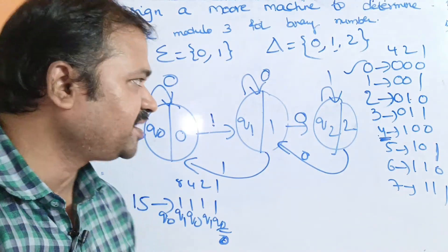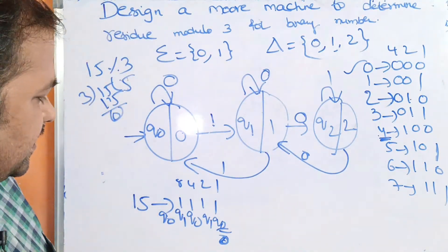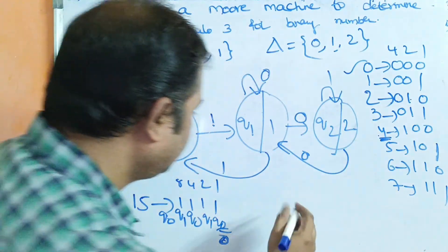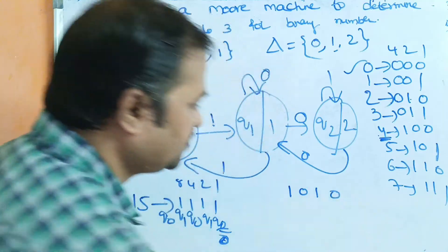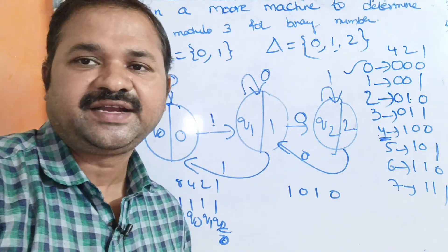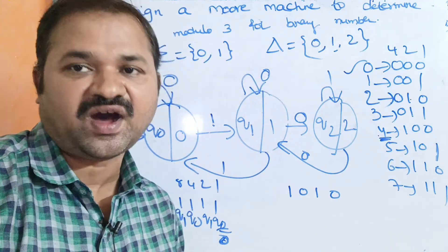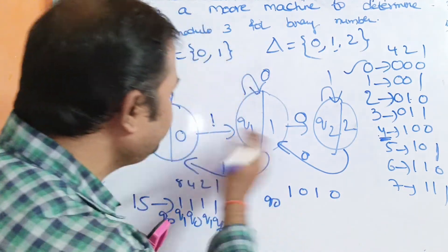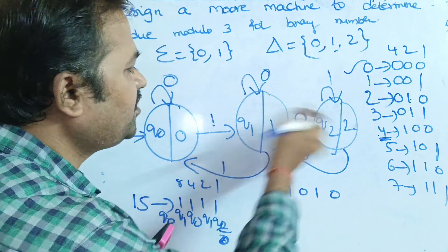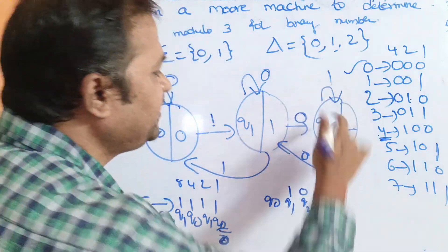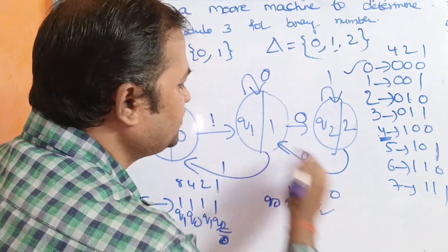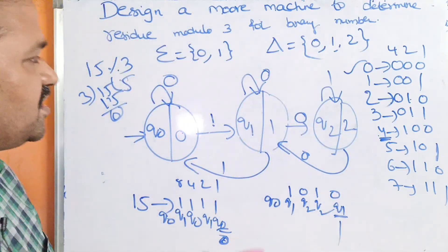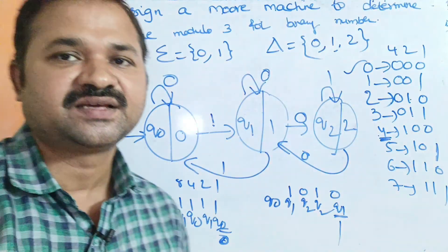Now let's take the number 10. In binary (4 bits), 10 is 1010. 10 modulo 3 equals 1, so we should end at Q1. Tracing: Q0 on 1 → Q1; Q1 on 0 → Q2; Q2 on 1 → Q2; Q2 on 0 → Q1. Q1 outputs 1. We conclude that our Moore machine is correct.